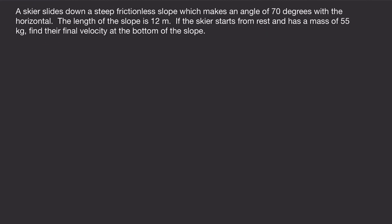In this last problem, a skier slides down a steep frictionless slope which makes an angle of 70 degrees with the horizontal. The length of the slope is 12 meters. If the skier starts from rest and has a mass of 55 kilograms, find their final velocity at the bottom of the slope. The skier is going down a pretty steep slope that rounds out at the ground, and this angle the slope makes is 70 degrees.